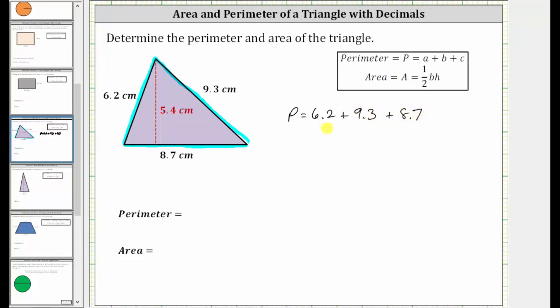Because we have decimals, let's determine the sum vertically, lining up the corresponding place values. We have 6.2 plus 9.3 plus 8.7. We bring the decimal point down into the sum. And now beginning with the rightmost place value, two plus three plus seven is 12.